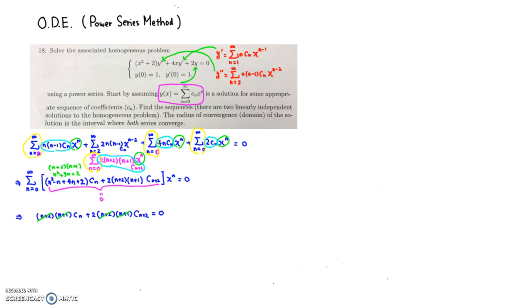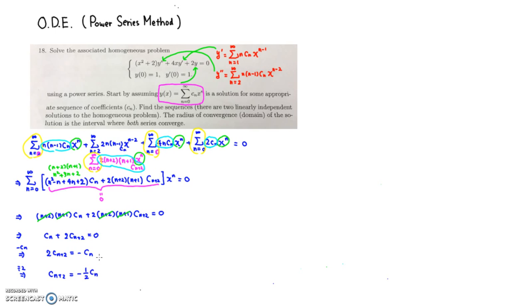What you get is simply cn plus 2 times cn plus 2 equals 0. Solving for cn plus 2 by subtracting cn: 2 times cn plus 2 equals negative cn. Dividing through by 2 gives the recurrence formula: cn plus 2 equals negative one-half times cn.